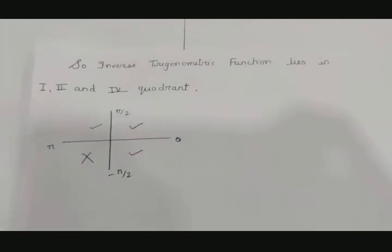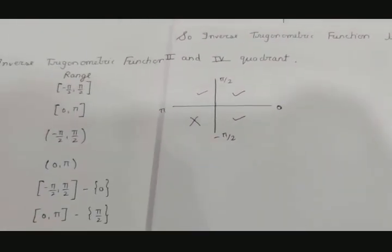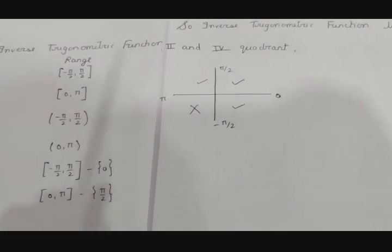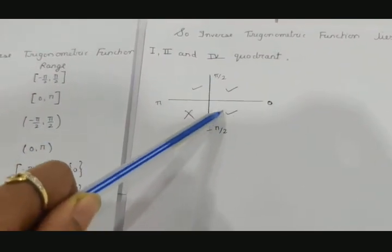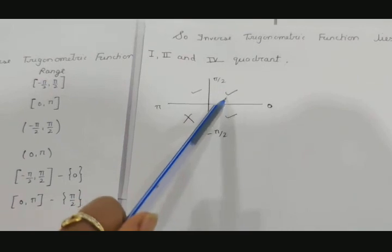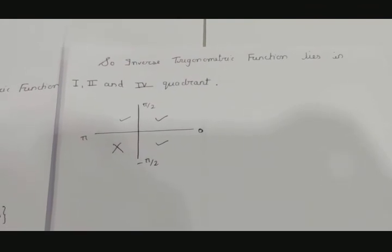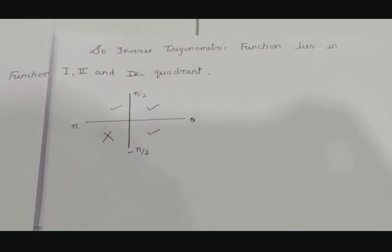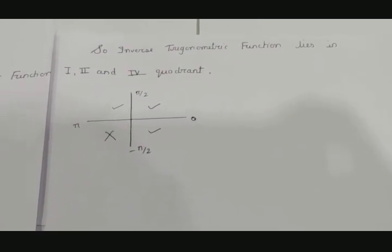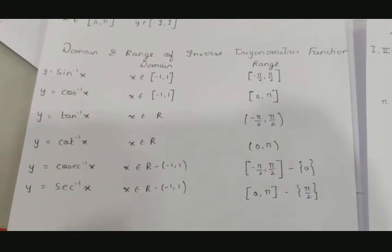We can observe that inverse trigonometric functions always lie in the first, second, or fourth quadrant only — never in the third quadrant. Because the range is either −π/2 to +π/2 (first and fourth quadrant) or 0 to π (first and second quadrant). The third quadrant is never covered. This is all about the introduction of inverse trigonometric functions — when the inverse exists (when the function is one-one and onto), and the domain and range, which we must always remember for questions. Thank you.